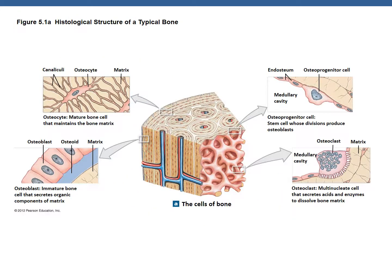Here we can see a sample of each one of the bone cells. On the upper left is the osteocyte — the mature bone cell inside its matrix — extending cellular projections called canaliculi in order to communicate with surrounding cells and maintain the matrix. Going clockwise, we have the osteoprogenitor cell, found on both the inside and outside of bone — these are stem cells that divide into other cells. Just beneath that are the osteoclasts, which secrete acids and break down bone matrix. Finally, osteoblasts secrete matrix and build bone.